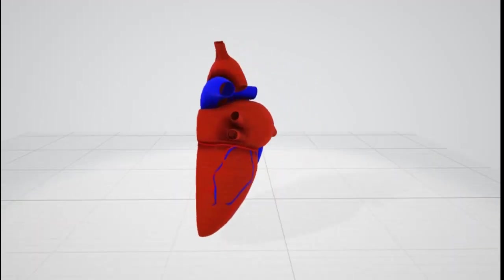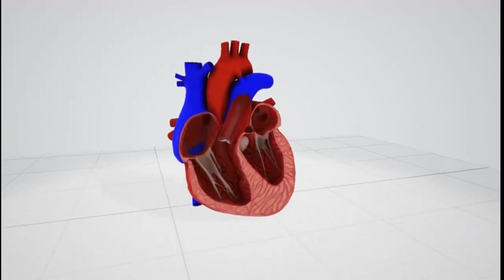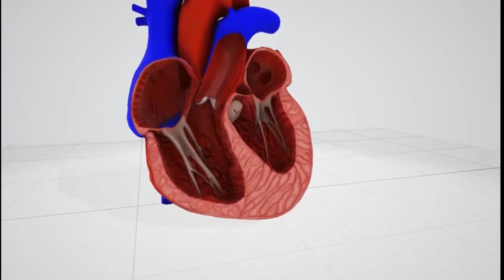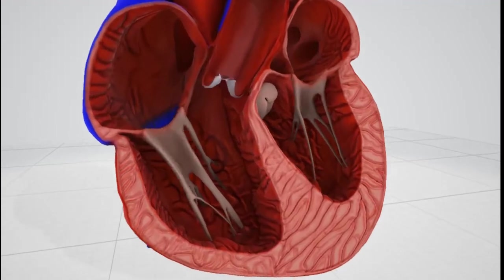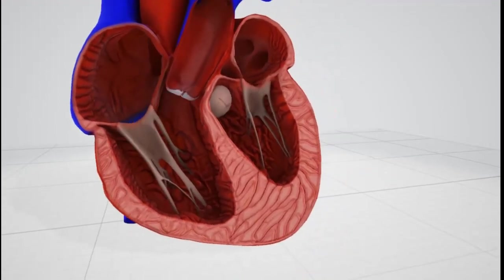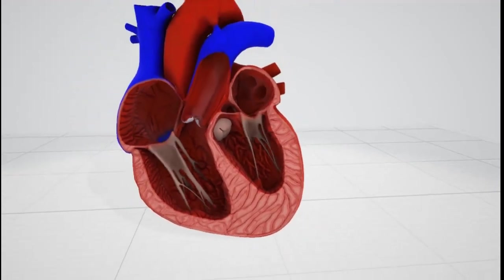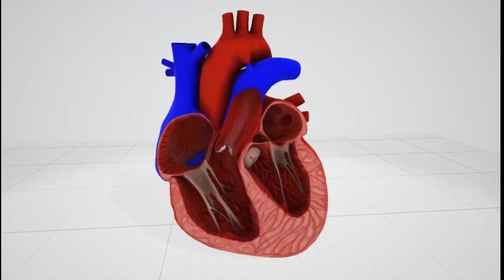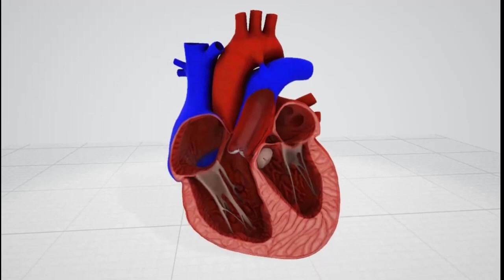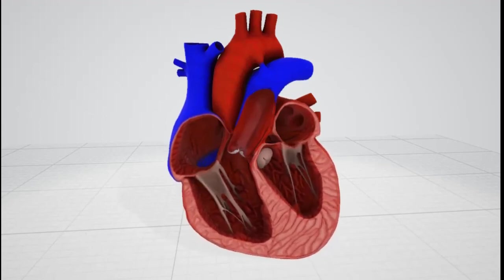Let's do a quick recap of the cardiac cycle. Phase 1 is passive ventricular filling, where 80% of blood from the atriums enters the ventricles. Phase 2 is atrial contraction, where the remaining 20% is pumped into the ventricles. Phase 3 is isovolumetric ventricular contraction, where both AV and semilunar valves are closed and the ventricles are being depolarized. Phase 4 is ventricular contraction, where blood is ejected into the arteries. Phase 5 is isovolumetric relaxation, where both valve types are closed, ventricular pressure decreases, and atrial pressure rises to begin the next cycle.